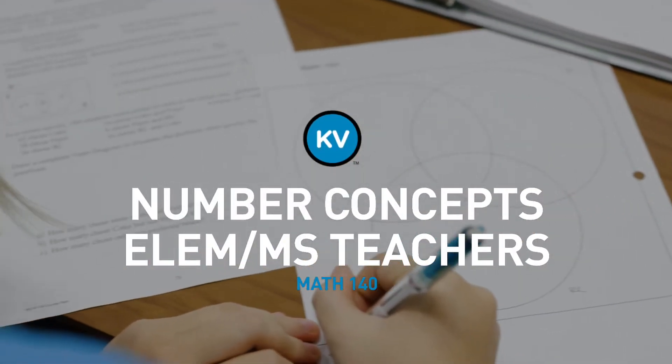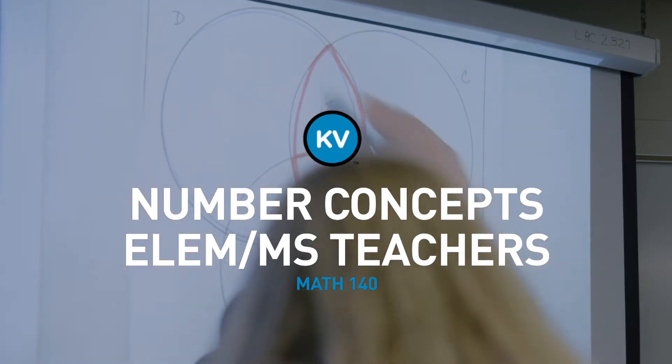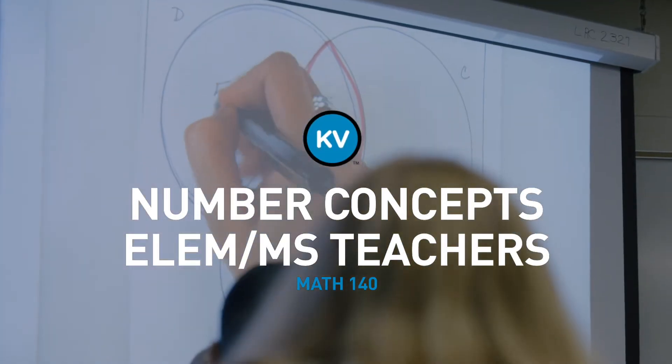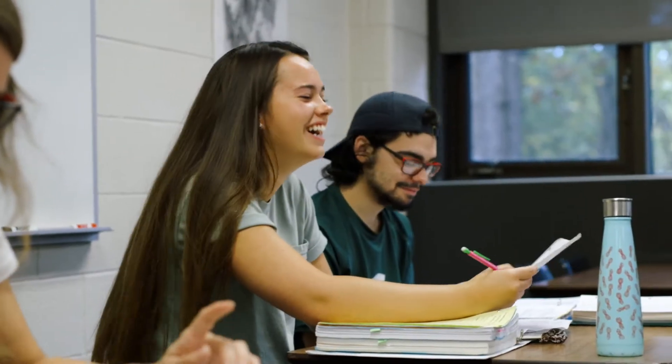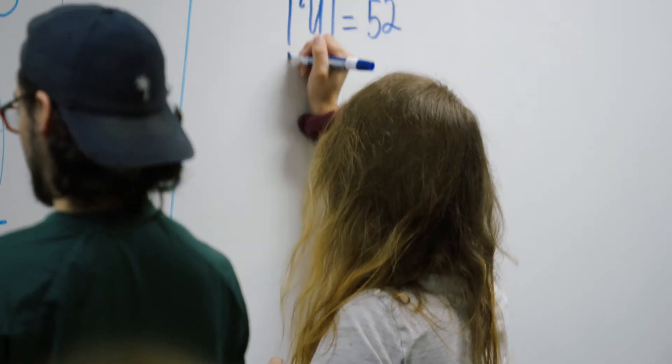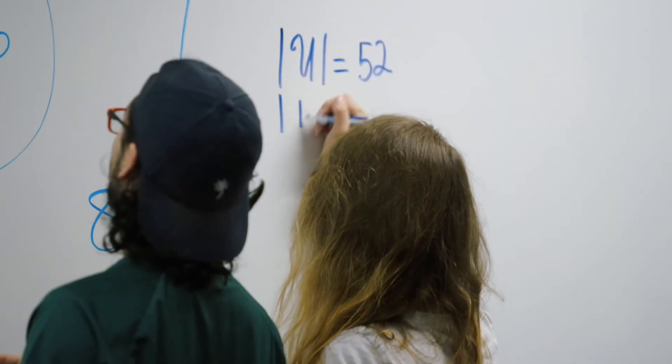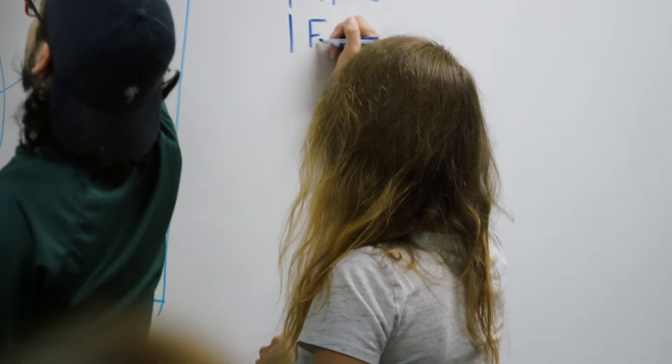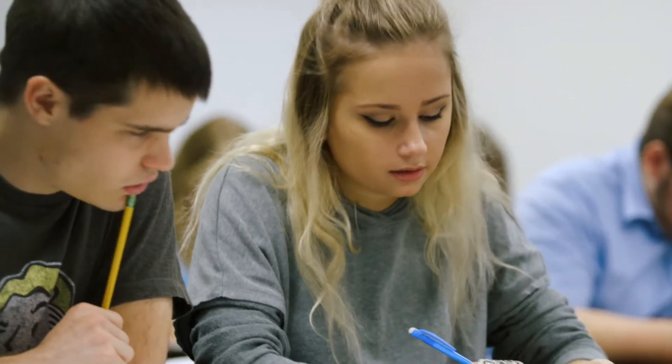Math 140 is number concepts for elementary and middle school teachers, and it's the first class in a series of math classes that students have to take in order to transfer over to Western, GVSU, or any of those four-year universities for their elementary education degree or their middle school education degree.